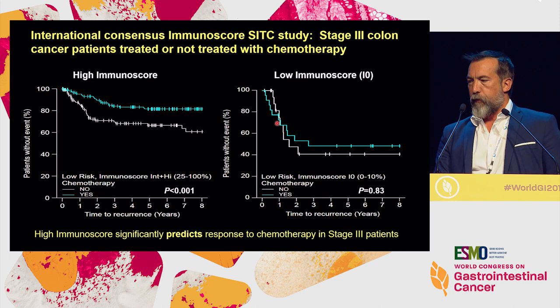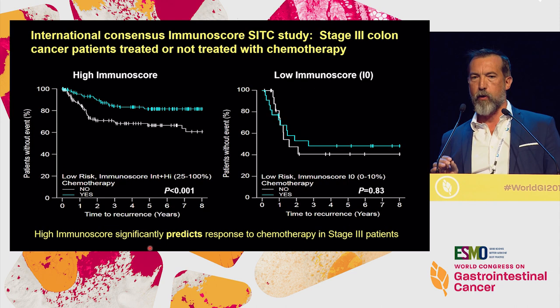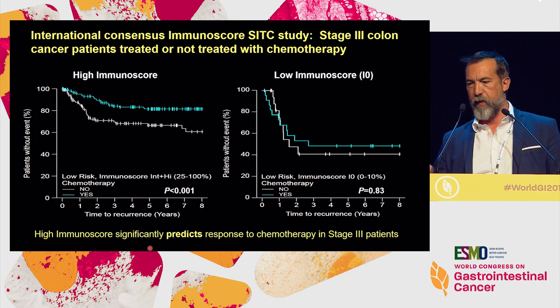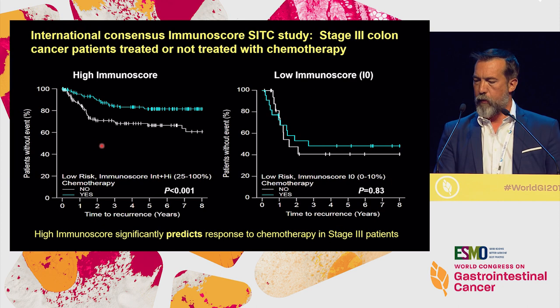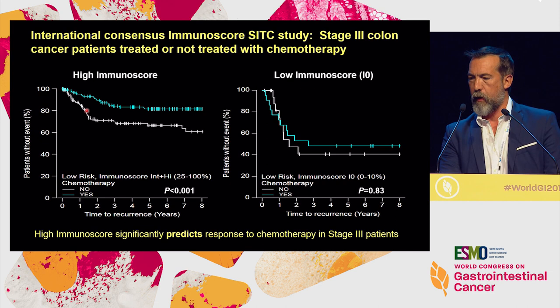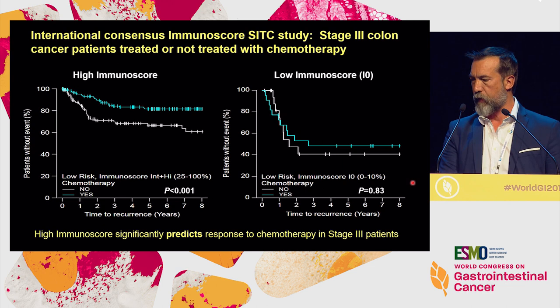In the SITC study, which included patients retrospectively, some stage 3 patients were not treated with chemotherapy — they refused treatment or were untreated for various reasons — providing a control arm even though it was not randomized. Patients who do not receive chemotherapy in stage 3 do badly; those receiving chemotherapy do better when they have a high immunoscore. But patients with a low immunoscore — immunoscore 0 — have worse outcomes and chemotherapy makes no difference (p=0.83). You need pre-existing immunity for chemotherapy to be efficient.